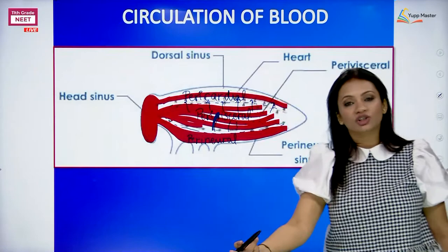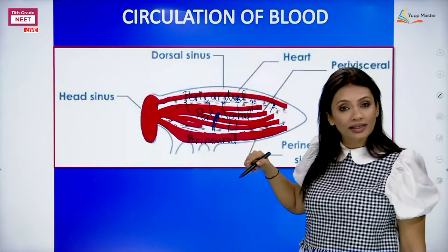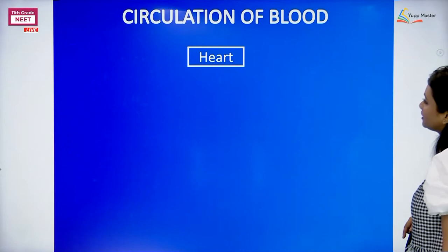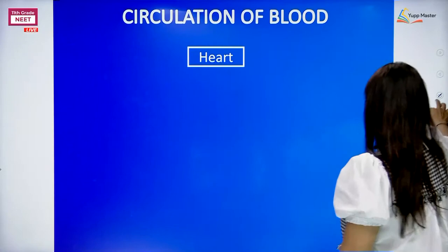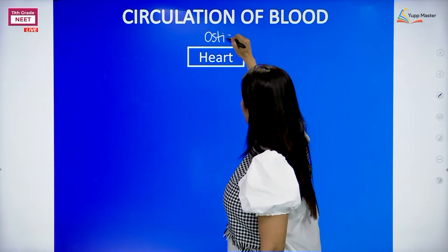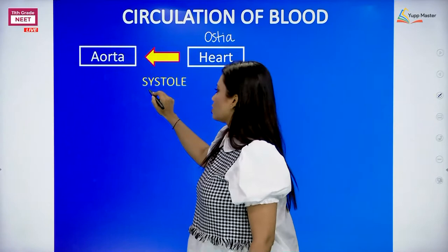Eventually the blood enters back into the heart - that is how the whole circulatory system takes place. Can we make a chart out of it? First, the heart is filled with blood because the openings - the ostia - allow blood to come in. Then the heart undergoes contraction, called systole. Once the heart contracts, all the blood enters into the aorta.